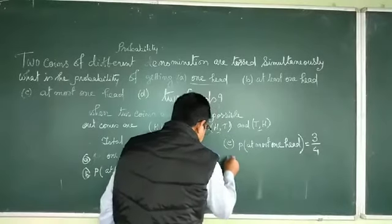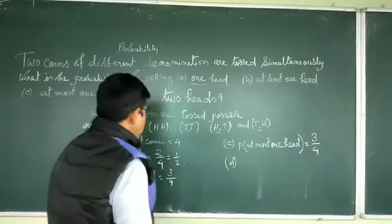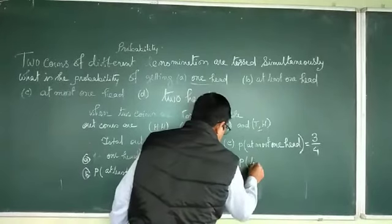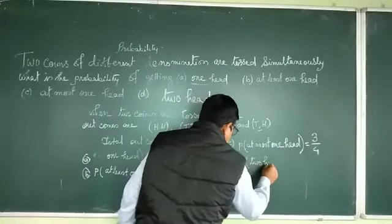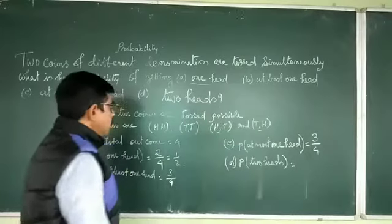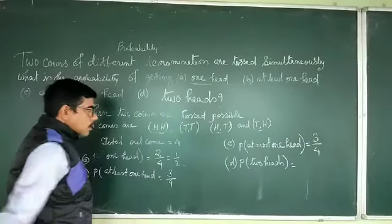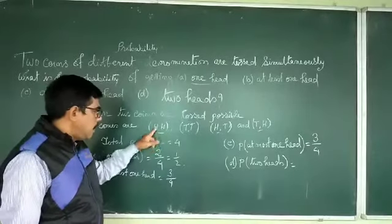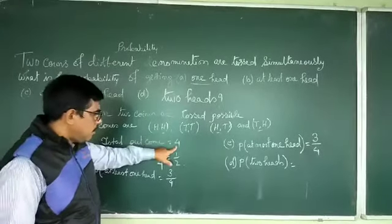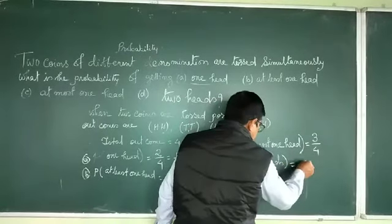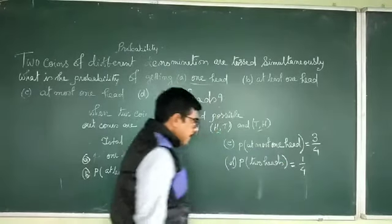Next, probability of two hits. Where do we get two hits? Only here — head-head. That is one time out of four. So the probability of getting two hits is one by four.